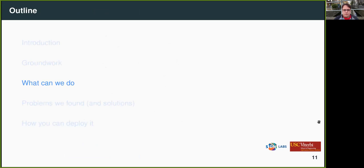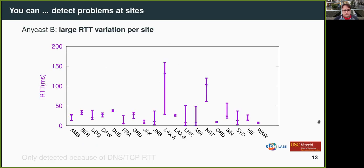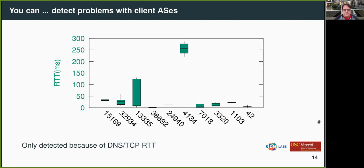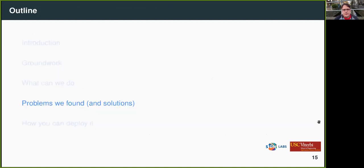Now that the groundwork is laid, what can we actually do with this analysis? You can detect problems at individual Anycast sites — Anycast networks have multiple sites where you announce prefixes. By analyzing incoming TCP data, you can figure out which sites have large RTTs, suggesting problems. You can also detect problems not per site but per client AS. For example, a particular client AS with RTT above 200 milliseconds clearly indicates something is wrong. This tool lets you find bugs and from that point, troubleshoot them.